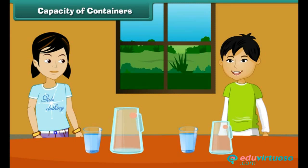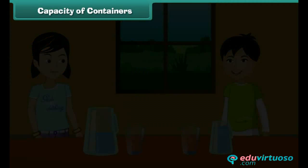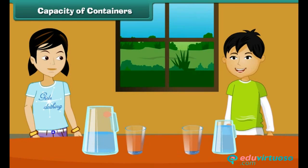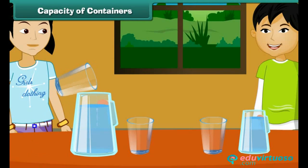Maria pours one glass of water in her jug. It looks like this. When John pours one glass of water in his jug, it looks like this. Maria thinks she will have to pour around two glasses of water to fill the jug, while John thinks he will have to pour one glass of water to fill his jug.